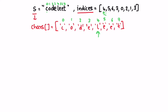We iterate through the string from left to right. The first character is 'c', so we insert 'c' at the fourth position in the character array. Then i is pointing at 5, so we replace that element — 'e' is replaced by 'o'. Next, i is pointing at 6 and the next character is 'd', so we replace the sixth character with 'd'.